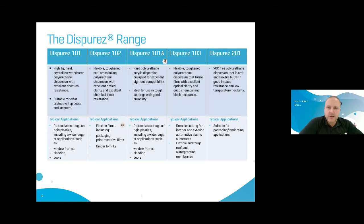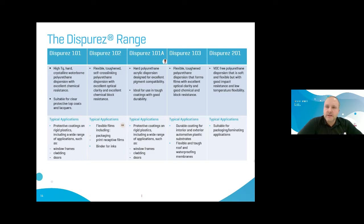DisPres 102 is a flexible, toughened, self-crosslinking PU dispersion with excellent optical clarity and excellent chemical and block resistance. DisPres 101A is a polyurethane dispersion acrylic hybrid designed for excellent pigmentation and ideal for use in tough coatings with good durability. Our latest addition is DisPres 103, a flexible, toughened PU dispersion that forms films with excellent optical clarity and good chemical and block resistance performance. Finally, DisPres 201 is a BRC-free polyurethane dispersion that is soft and flexible, offering good impact resistance and low temperature flexibility without the tackiness typically seen with acrylics, making it suitable for packaging laminating applications.